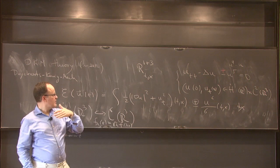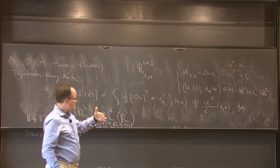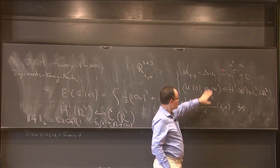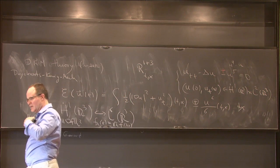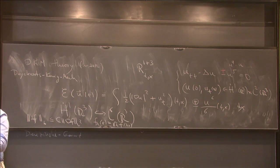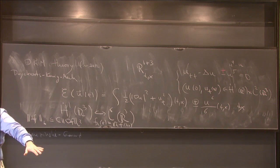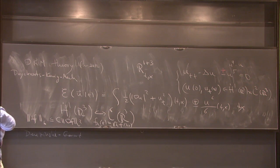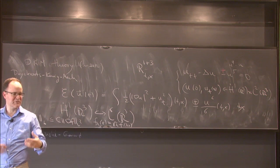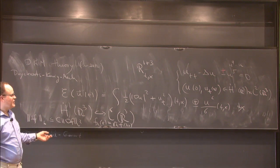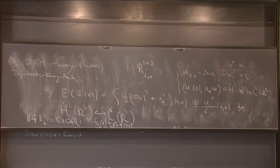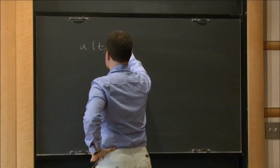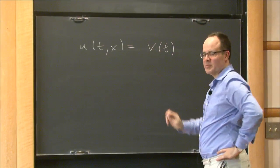For the defocusing case, if you take data in Ḣ¹ × L², then you have global existence and scattering to a free wave. If you take smooth compactly supported data, then your solution stays smooth with compact support expanding by finite propagation speed for all times. But when you put the minus sign, the dynamics is much more subtle.